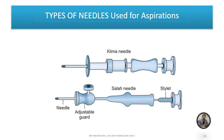Different types of needles are used for bone marrow examination. The Klima needle and the Salah needle are the best choices for aspiration. The Salah needle has an adjustable guard, a needle, and a stylet.